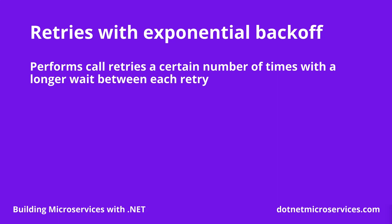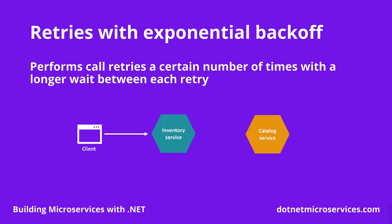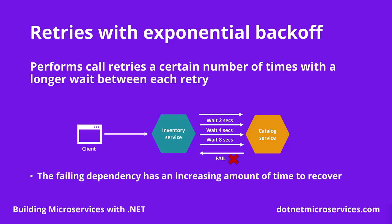This strategy performs call retries a certain amount of times with a longer wait between each retry. Here's how it works: the client will make a request to our service, and this one in turn will make a request to its dependent service. If this second request fails, instead of failing right away, our service will wait some time and then try again. If the request fails again, we will wait a longer amount of time before trying the request. If it keeps failing, we will wait a yet longer amount of time before one more try. And eventually, if we have tried enough times with no successful response, we will let the call fail. This strategy lets the failing dependency have an increasing amount of time to recover, and it also avoids overwhelming the dependency.